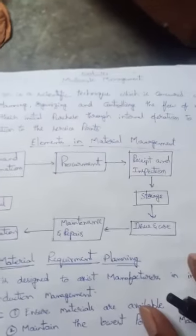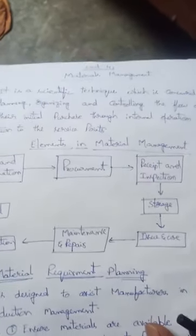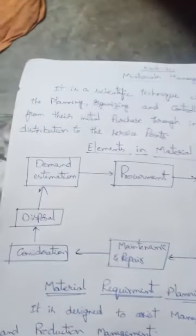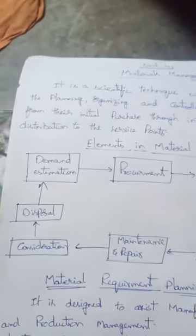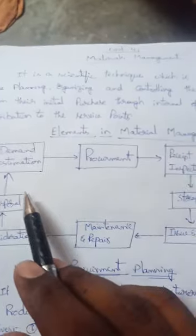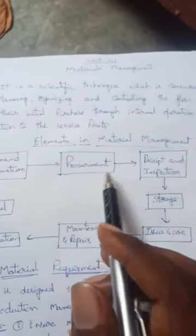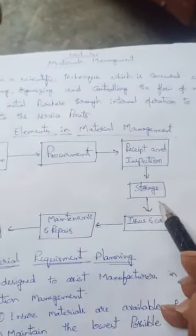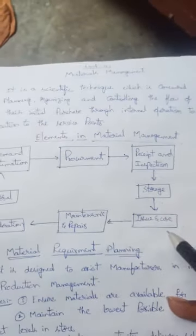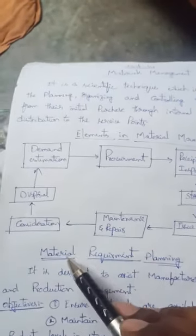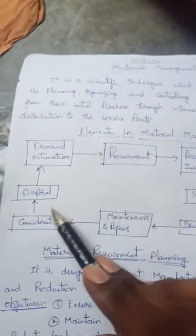As from this particular curriculum, there are some elements in materials management. As from the diagram, the elements are: demand estimation, procurement, receipt and inspection, storage, issue and use, maintenance and repairs, and consideration and disposal.